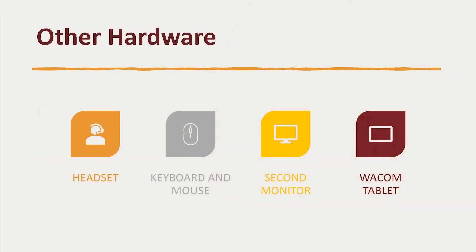Outside of a computer, we don't have many specific hardware requirements. We do require that students use a headset while interacting with their peers, as it helps block out background noise, which can be very distracting in a classroom environment. We also require that students use a keyboard and mouse and not attempt to participate solely on a touchscreen interface. We do recommend that students have a second screen, although it's not a requirement as some students find it distracting. We will be providing a Wacom drawing tablet to all students, to ensure every student has a way to draw onto a screen without using a mouse, which will be important for math and science classes.